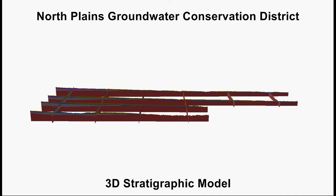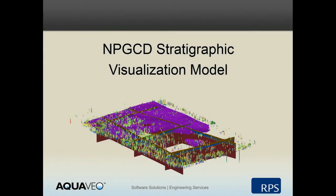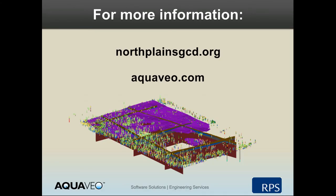Additional visualizations of the model are also available in the form of easy-to-use 3D PDFs, which allow anyone with the free Adobe Acrobat Reader software installed on their computer to visualize and interact with the model. This video has shown some of the features of the three-dimensional stratigraphic model created for the North Plains Groundwater Conservation District. The model is a useful tool for educating anyone interested in groundwater resources in the district. For more information, please visit northplainsgcd.org or aquaveo.com.